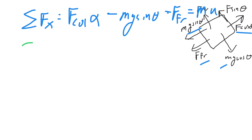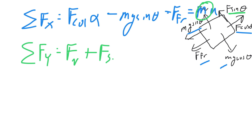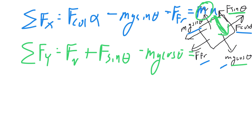Now let's also do our vertical summation, sum of Fy. We take all the vertical forces: the normal force going up, plus F sine alpha since we're pulling up slightly, minus mg cosine theta. This equals MA, but notice the vertical motion is zero — there's no acceleration in that direction — so this equals zero.